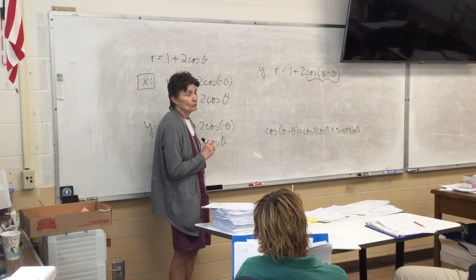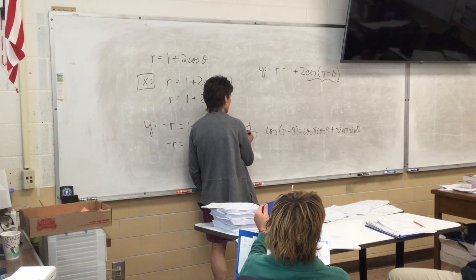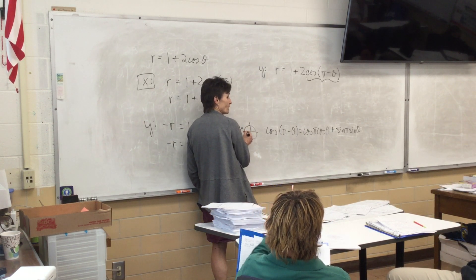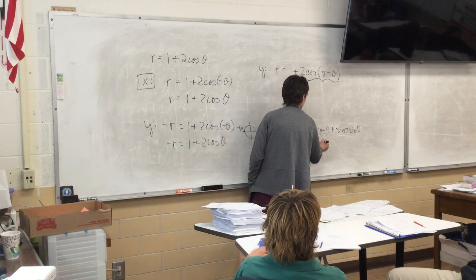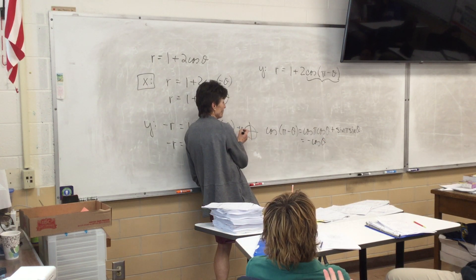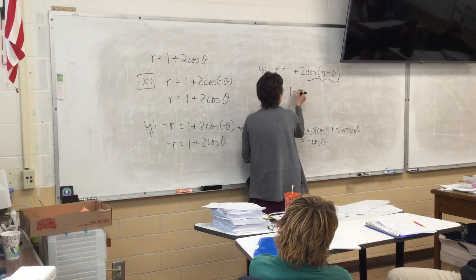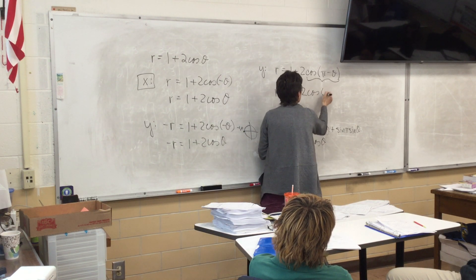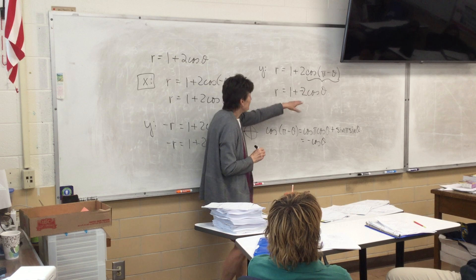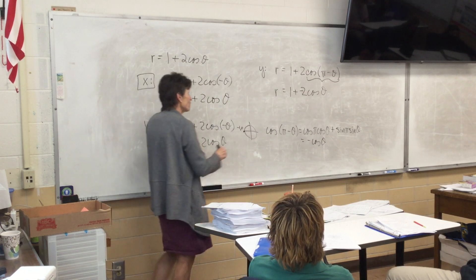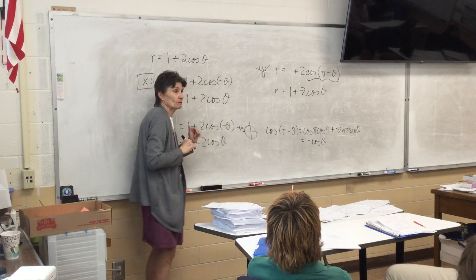Now I need to put in the values for cosine π and sine π. The cosine of π is negative one, so this is negative cosine. The sine of π is zero, so that just comes out to be negative cosine θ. My equation now looks like negative cosine θ. Is that the same as the original? No. Since both tests for the y-axis fail, I do not have symmetry about the y-axis. So I had it about x, I don't have it about y.